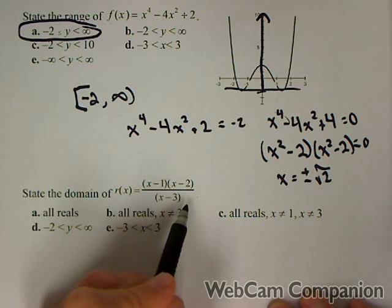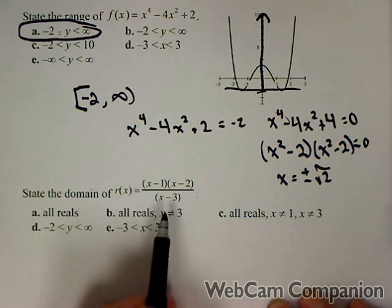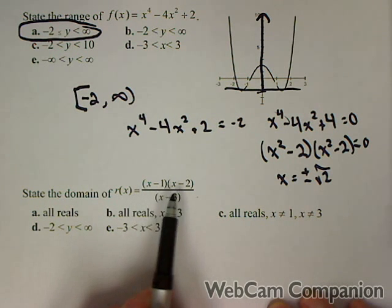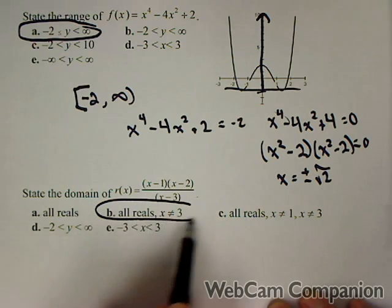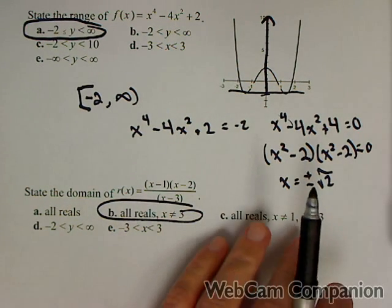So we do not wanna include three in our domain. But all the other points are fine. One and two are fine, they just make it zero. So it's gonna be b, all reals except for where x is three.